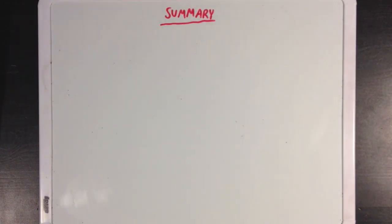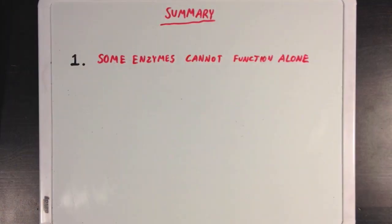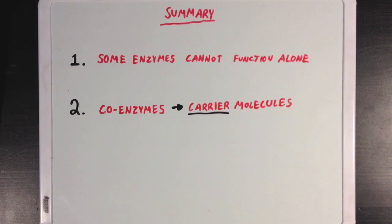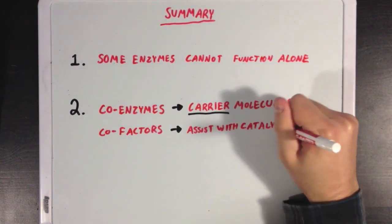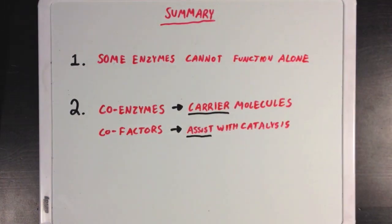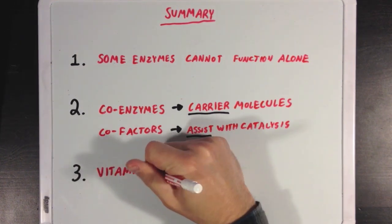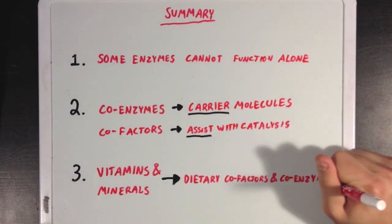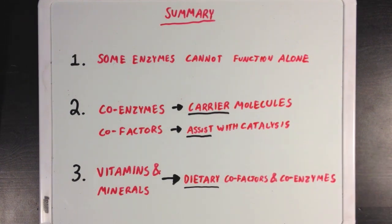So, what did we learn? Well, first we learned that not all enzymes are able to function alone, and some need a little help. Next we learned that this help can come from coenzymes, which usually act as carrier molecules, or cofactors, which directly assist with the catalysis that the enzyme is doing. And finally, we learned that vitamins and minerals generally refer to dietary cofactors and coenzymes.